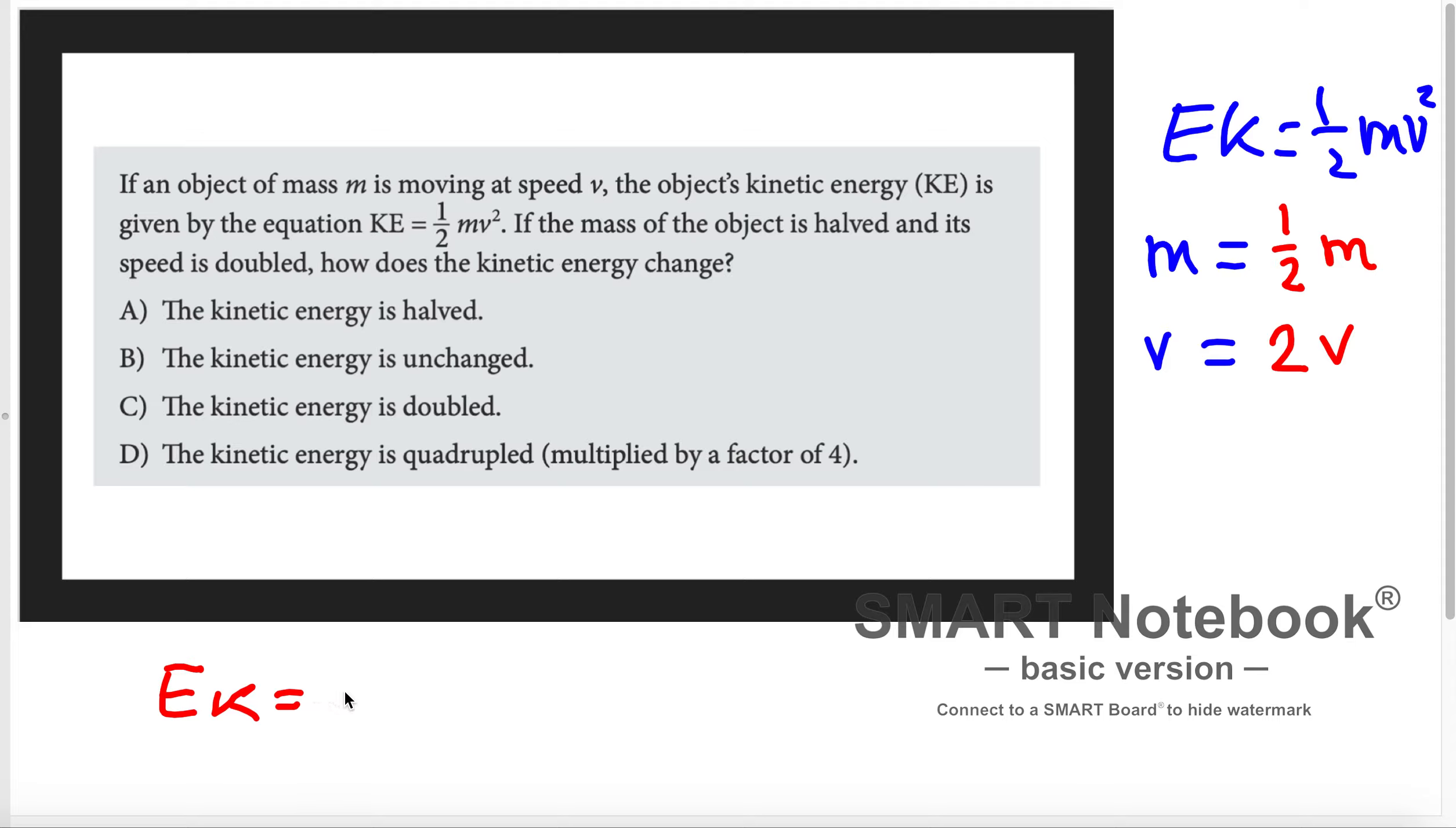So this is going to be equal to 1/2, whatever we have here, and the new mass is 1/2 m times, and now instead of v squared, I am plugging in 2v. So here is 2v, and everything is squared.